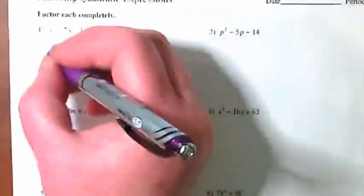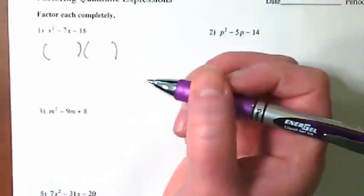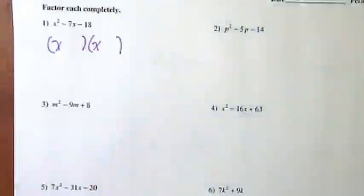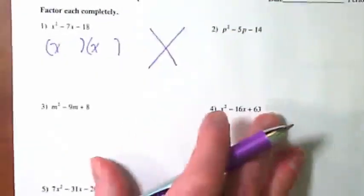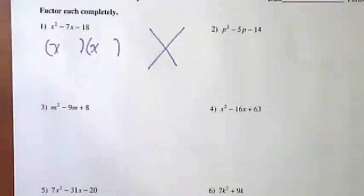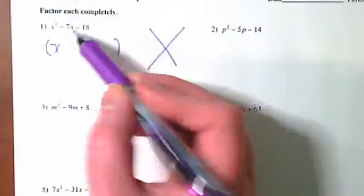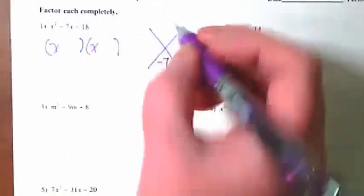We're going to start with number 1. The first thing we want to do is draw our parentheses and fill in our variable, which in this case is x and x. We're going to draw our x puzzle here.